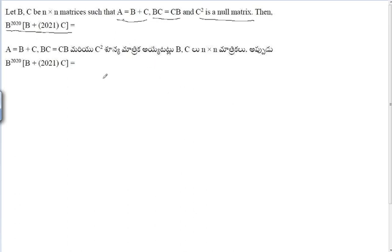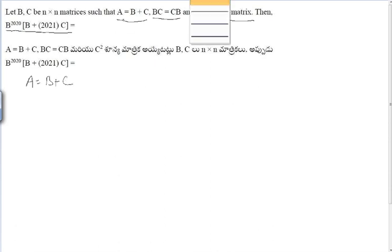The given conditions are: A = B + C, C² is the null matrix, and BC = CB (B and C commute).